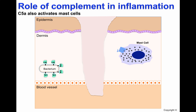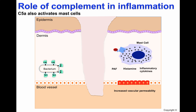Mast cells also possess a C5a receptor. Upon binding of C5a, mast cells are activated and will release platelet activating factor (PAF), histamine, and other pro-inflammatory cytokines. These molecules will activate endothelial cells to increase vascular permeability. The increase in vascular permeability allows fluid from blood vessels to enter the site of infection, leading to edema. The activation of endothelial cells also aids the chemotaxis of immune cells to the site of infection. The result of all of these actions is inflammation.